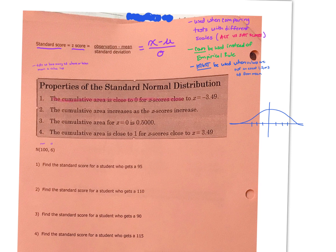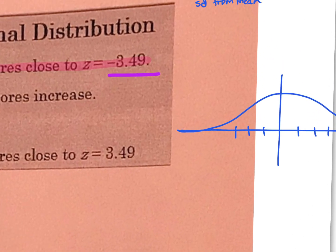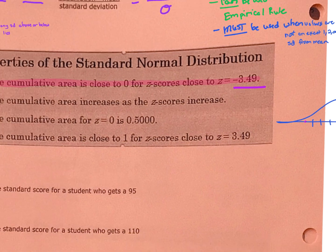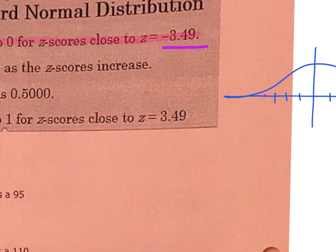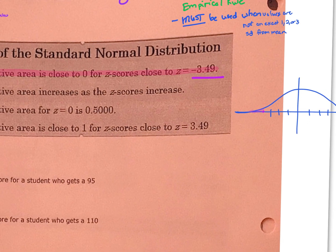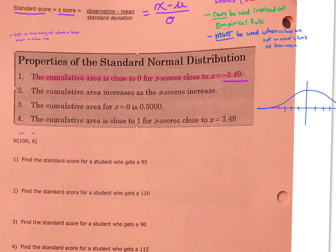The first property: the cumulative area is close to zero for z-scores that are close to negative 3.49. A z-score of negative 3.49 means the negative tells us we are below the mean, and negative 3.49 means we are almost three and a half standard deviations below the mean — so we'd be way out on the left tail. The cumulative area implies we're talking about the area from as far to the left as possible up to that particular location, and essentially there's nothing there — there are not going to be any values.